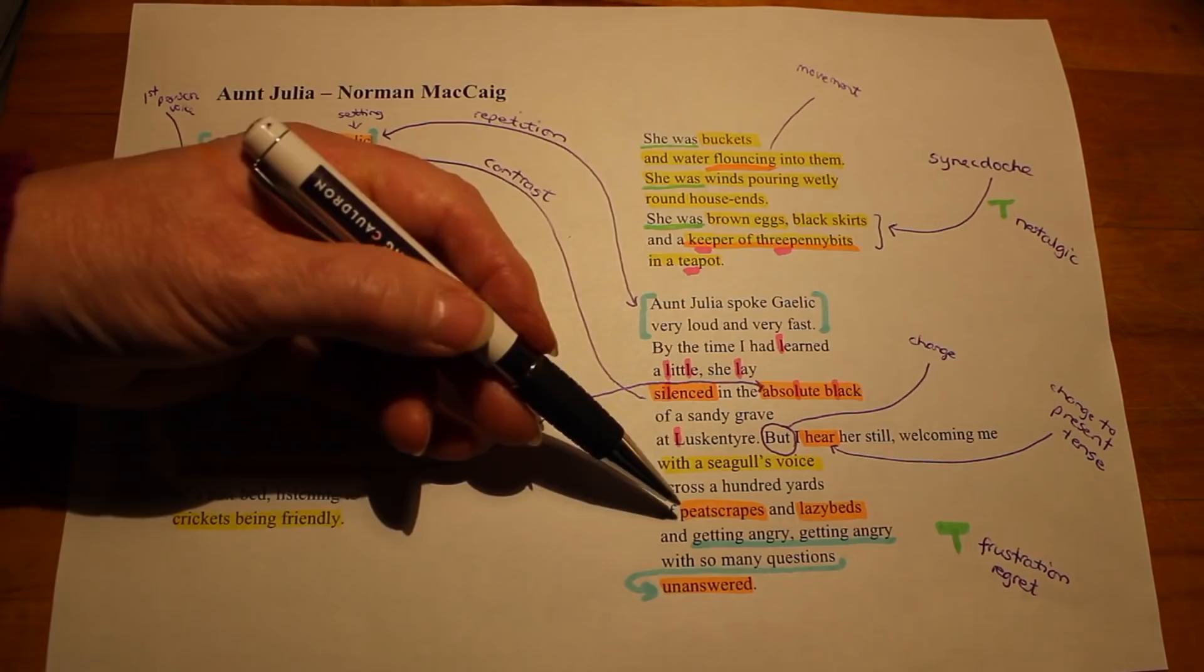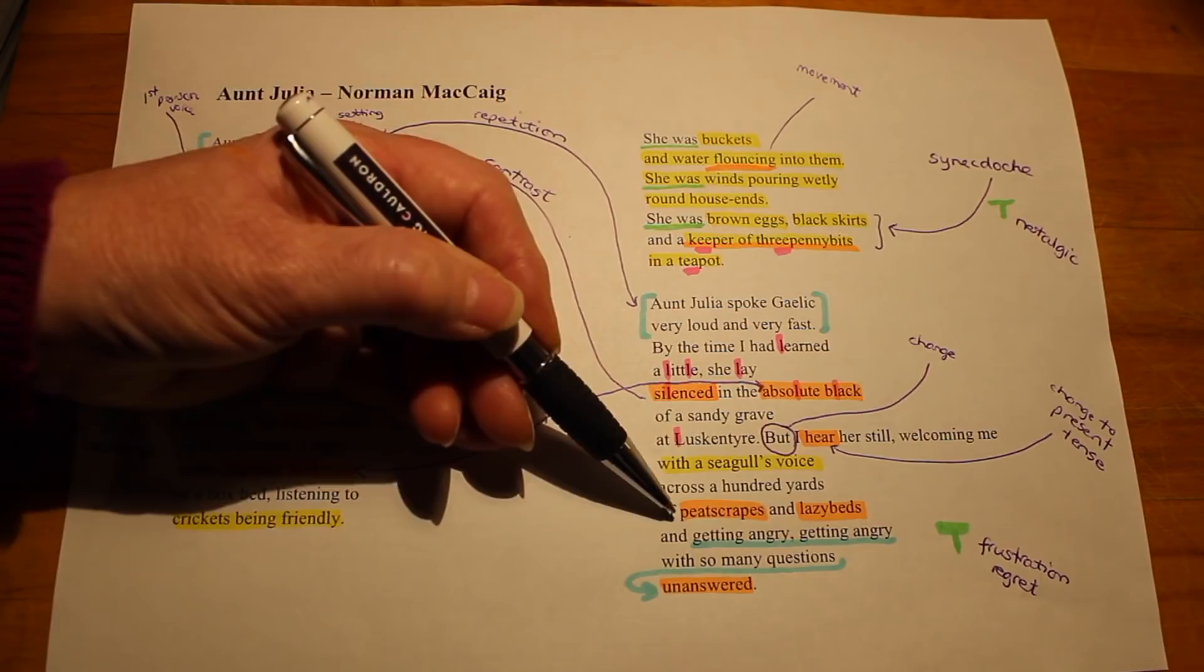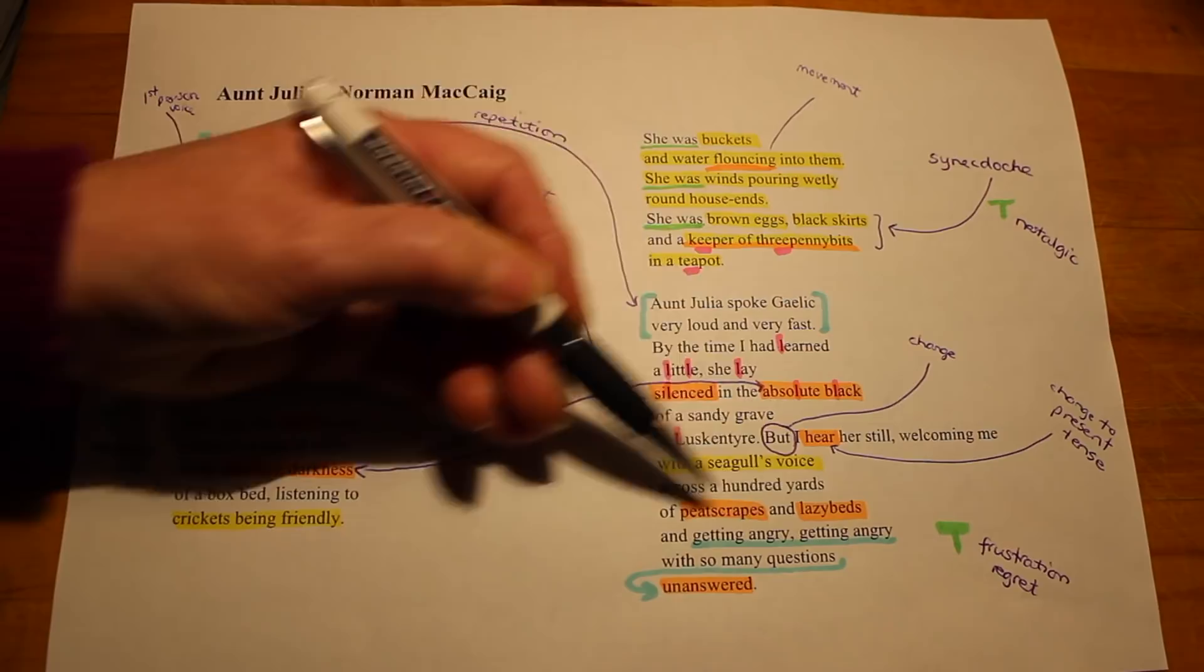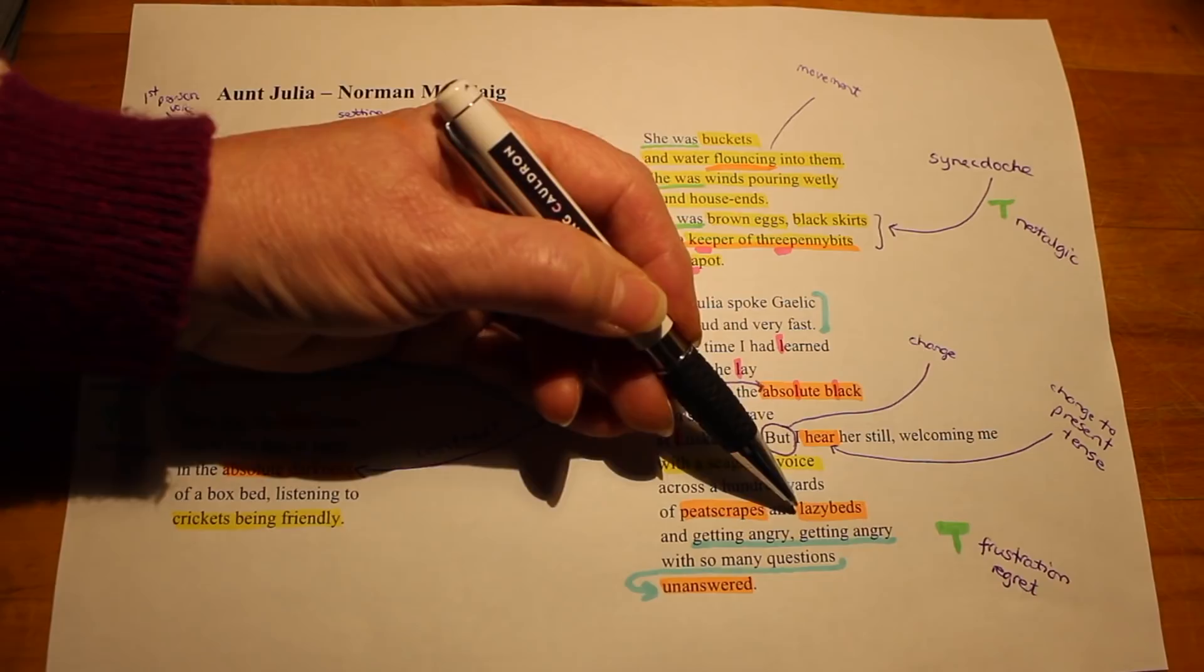And he makes a reference here to two of the aspects of the crofting landscape, peat scrapes and lazy beds. Peat scrapes were the parts of the hill where, as I mentioned previously, they scraped away the grass to get at the peat underneath, so they had fuel for their fire in the winter.